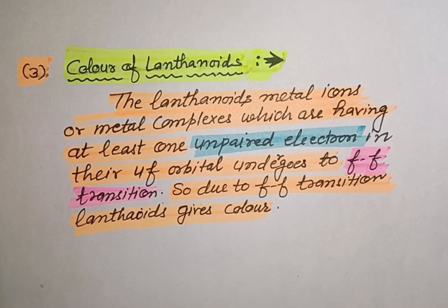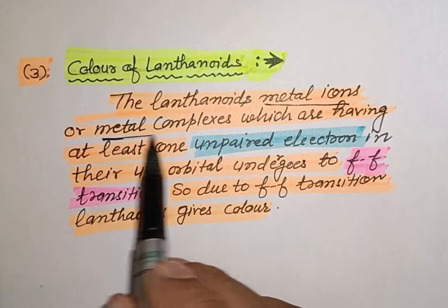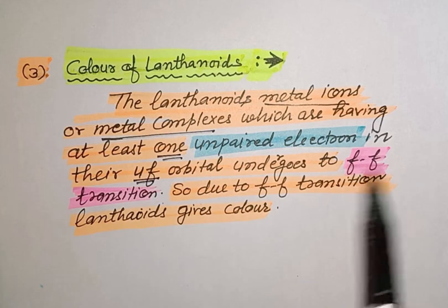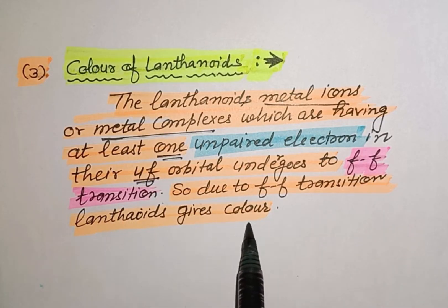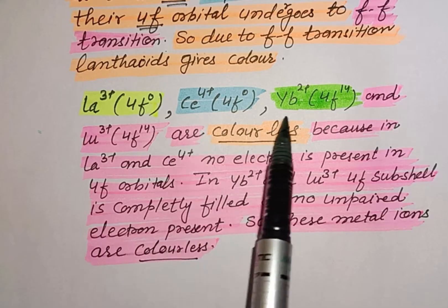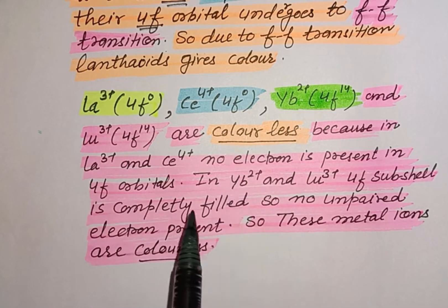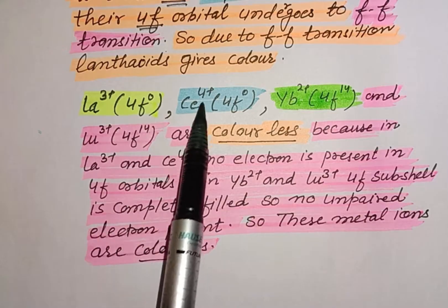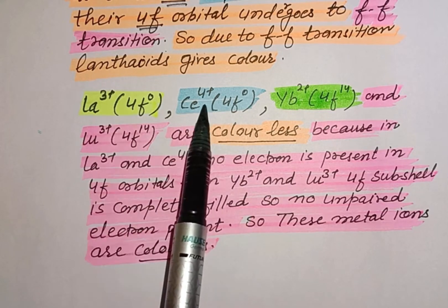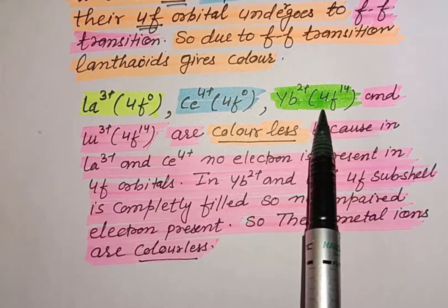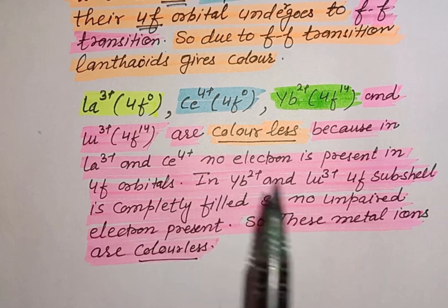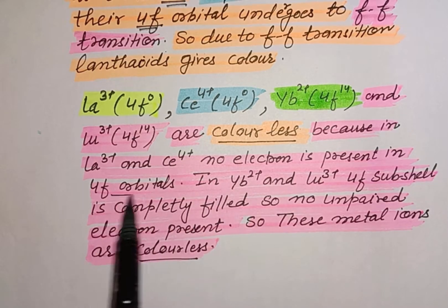The next topic is color of lanthanoids. Lanthanoid metal ions or lanthanoid metal complexes which have at least one unpaired electron in their 4f orbitals show f-f transitions, and due to these f-f transitions the lanthanoid metal ions or complexes give us color. Some lanthanoid metal ions like lanthanum(+3), cerium(+4), ytterbium(+2), and lutetium(+3) are colorless because in lanthanum(+3) and cerium(+4) there is no electron present in the f subshells (f⁰ configuration), and in ytterbium(+2) and lutetium(+3) all 14 electrons in the f orbitals are paired. Since no unpaired electron is present they do not show f-f transitions, and that is why these are colorless.